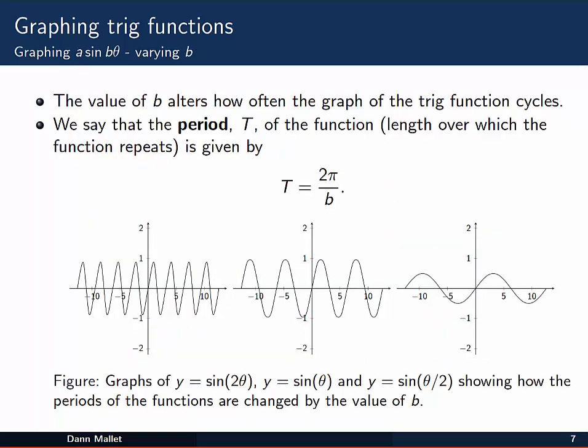The value of b, this number inside here multiplying by theta the angle, alters how often the graph of the trig function cycles, in other words, how rapidly it repeats itself. The period, often denoted with a capital T of the function, in other words the length over which the function repeats itself, is given by this formula: T equals 2 pi divided by b.